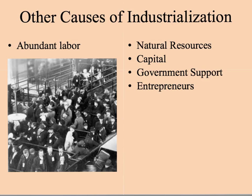Other causes of industrialization include an abundant labor pool — from 1870 to 1916, over 25 million new immigrants came to the U.S. seeking jobs in new industries. There were also abundant natural resources like iron ore and oil, as well as capital: with business success came investors buying stocks and bonds, providing companies the capital to expand. Government support through protective tariffs and subsidies helped promote economic growth, and skilled entrepreneurs who knew how to run efficient businesses also played a key role.